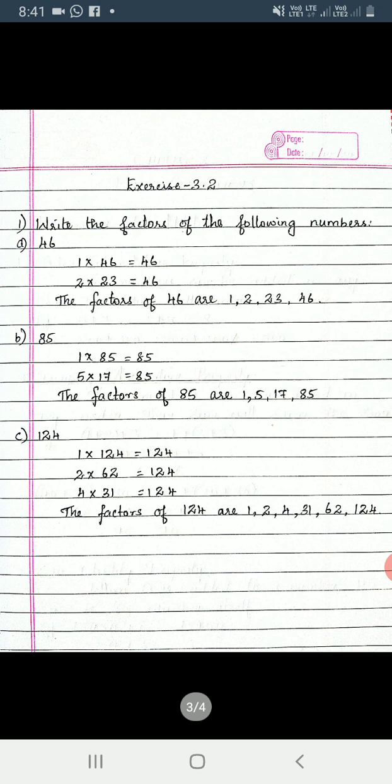Keeping this in mind, we are moving to exercise 3.2, question number 1. Write the factors of the following numbers. We have already discussed what are factors. So now we will find for number 46 as question a. Factors, in the sense, we are going to see in which all tables we will get the given number.